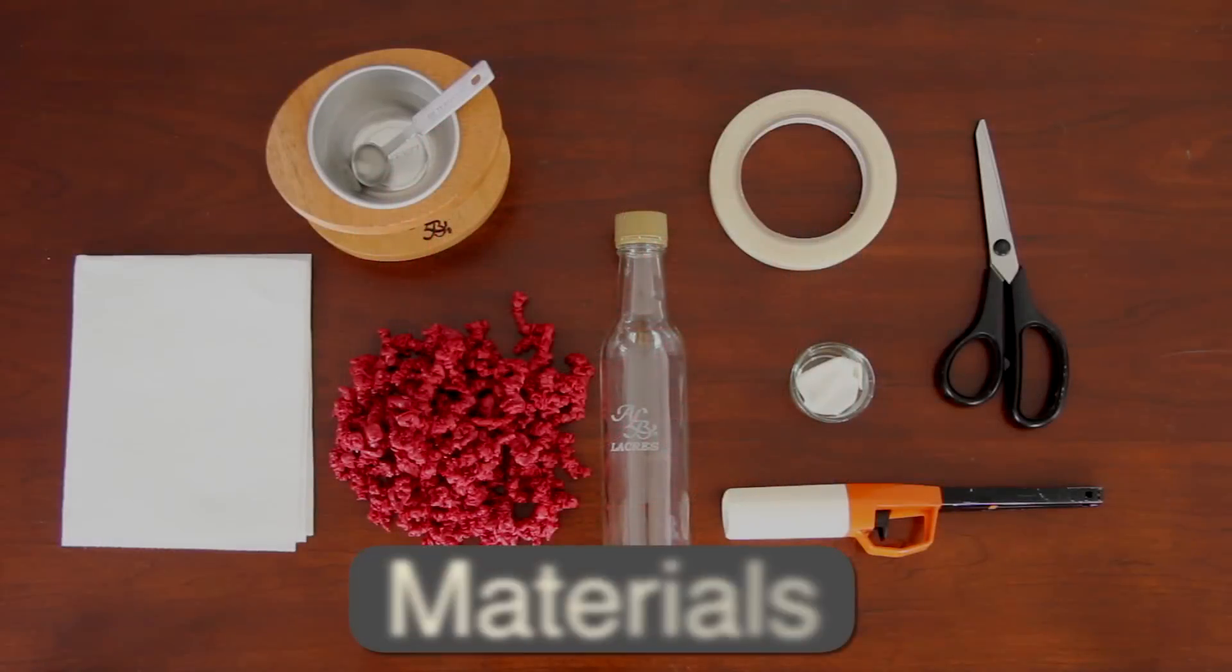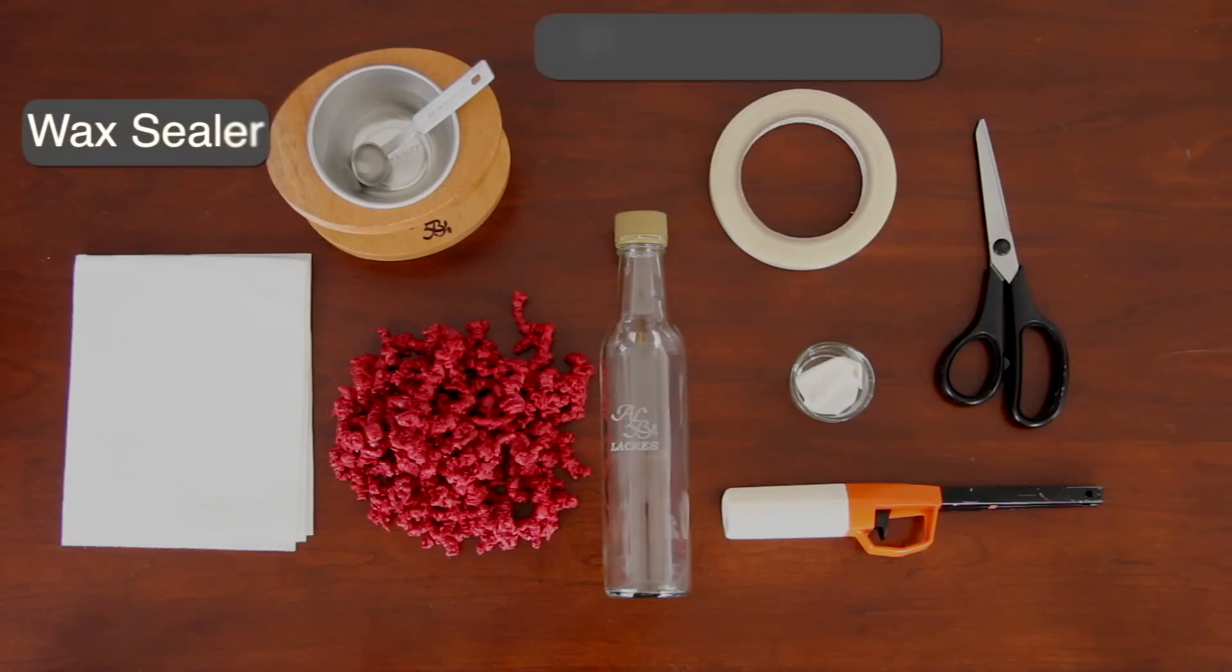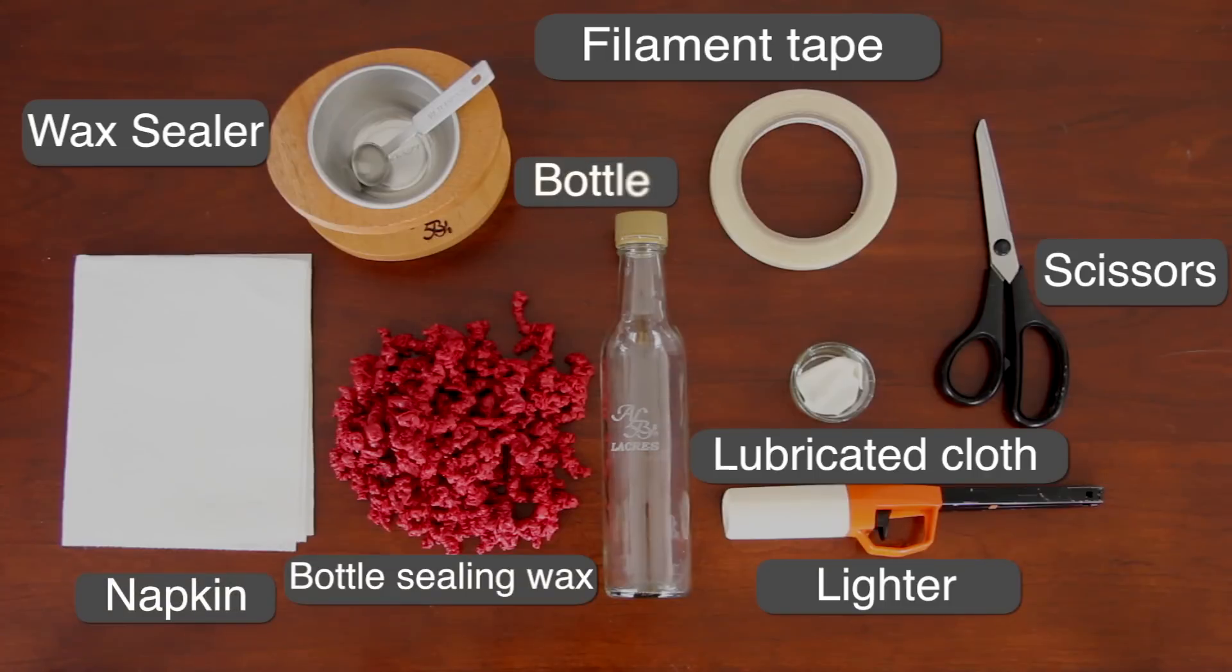To seal bottles with a wax sealer, you need the following materials: wax sealer, filament tape, scissors, lubricated cloth, lighter, granulated bottle sealing wax, paper towel, and bottles.